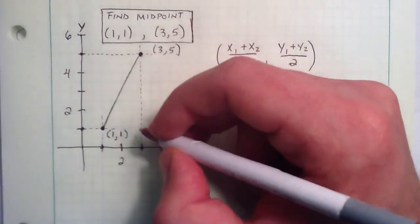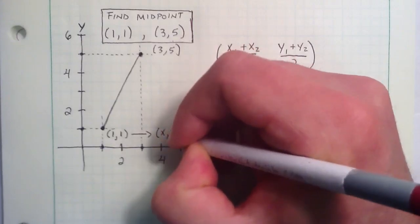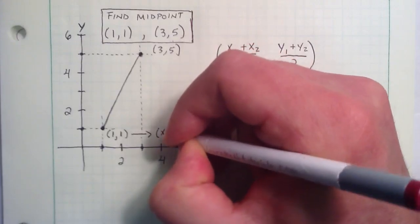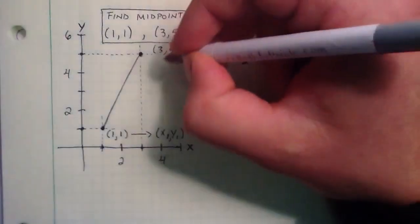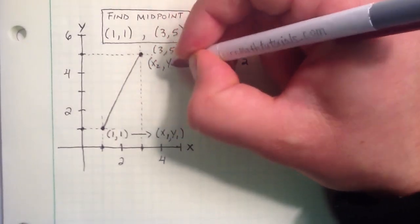So we're just going to go ahead and rename this point (x1, y1). And this one we're going to rename (x2, y2).